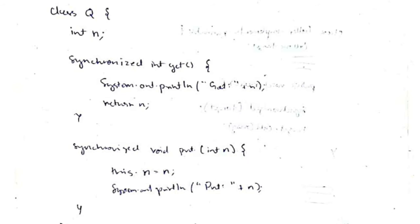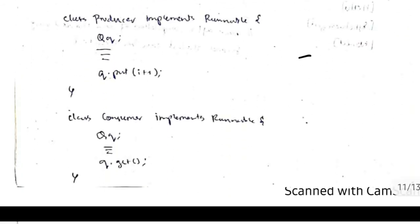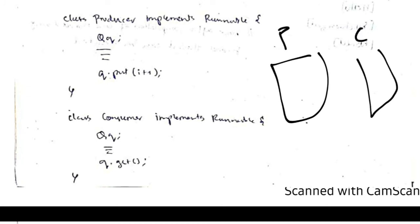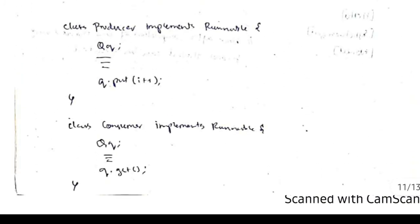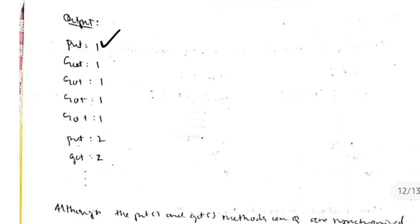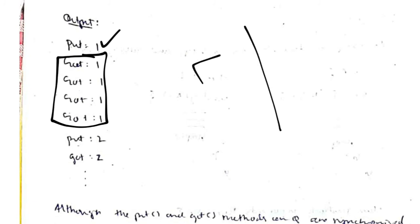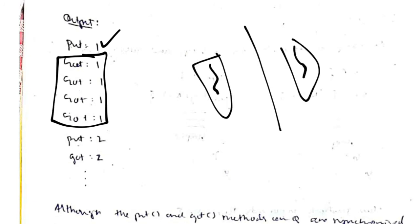Two threads — one for producer and one for consumer — run independently using the Runnable interface. Since their execution frequencies are independent, synchronization alone is not effective. The put function puts a good and increments i, while the get function prints the got value multiple times because the threads don't know when the other has acted.